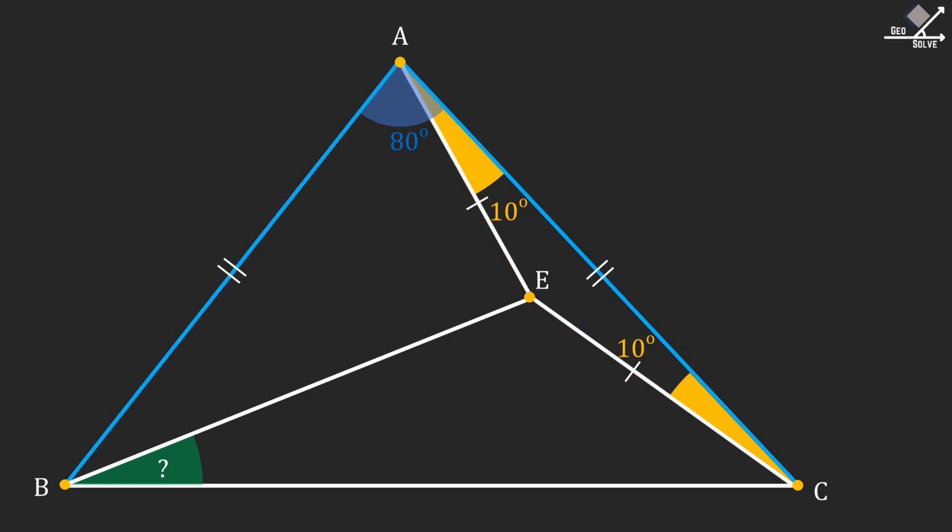And also, it is given that line AB is equal to line AC, which makes triangle ABC an isosceles triangle also. We know that angle BAC is 80 degrees, so the base angles can be calculated as 50 degrees each.